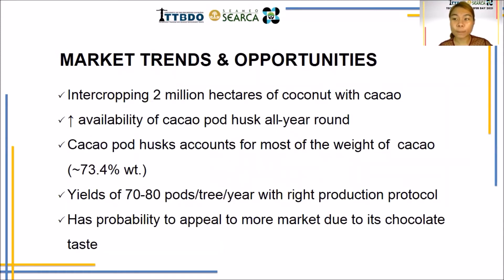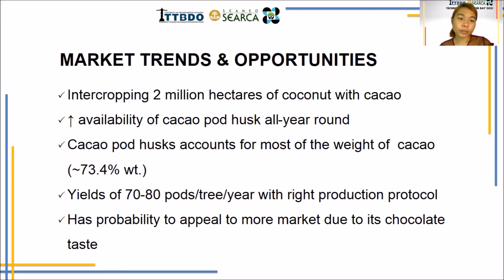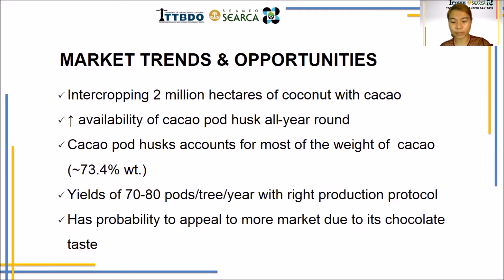Intercropping is possible in 2 million hectares of coconut, and coconut and cacao are complementary. Intercropping these two diversifies the available produce and makes use of soil nutrients efficiently. Furthermore, there is a high availability of cacao pod husk all year round. The country produces around 10,000 to 12,000 metric tons of cacao beans per year, generating around 7,300 to 8,760 metric tons of cacao pod husk. By utilizing cacao pod husk, it will significantly reduce the waste generated from cacao and there will be a higher supply of raw materials for production of dietary fiber.